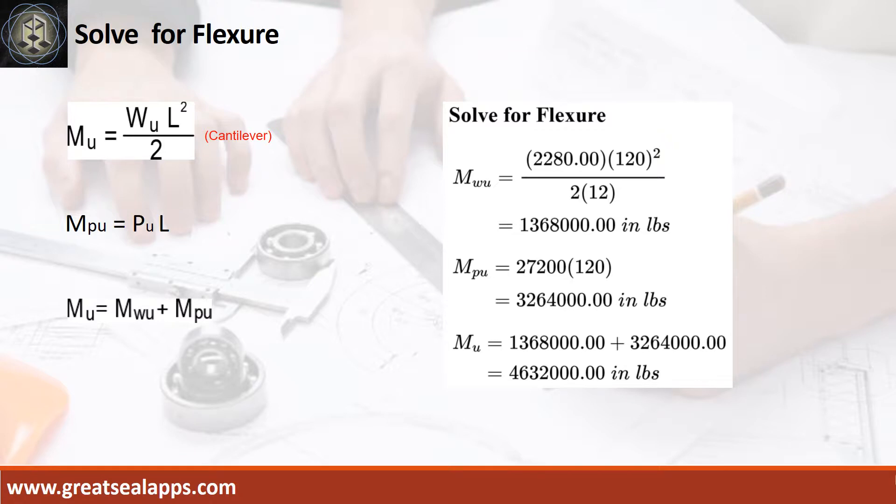Given factored uniform load equals 2,280 pounds per foot, factored concentrated load equals 27,200 pounds, L equals 10 feet. The maximum moment from uniform load is 1,368,000 inch pounds. The maximum moment from concentrated load is 3,264,000 inch pounds for a total maximum design moment of 4,632,000 inch pounds.